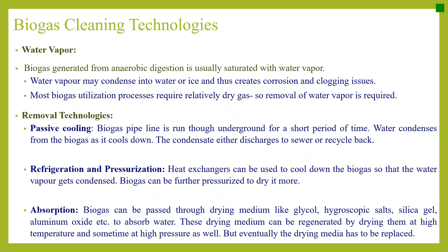Refrigeration and pressurization: a heat exchanger can be used to cool down the biogas so that water vapour condenses, and biogas can be further pressurized to dry it more. Absorption: biogas can be passed through a drying medium like glycol, hygroscopic salts, silica gel, or aluminium oxide to absorb water. This drying medium can be regenerated by drying at high temperature and sometimes high pressure, but eventually the drying media has to be replaced.